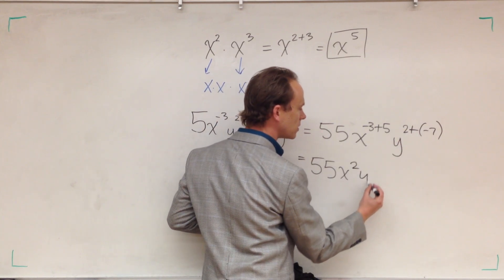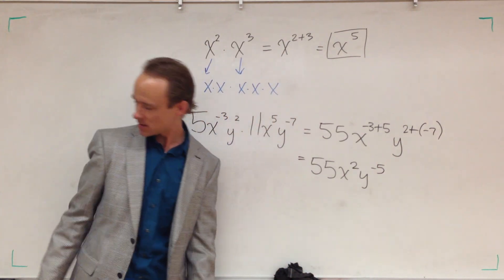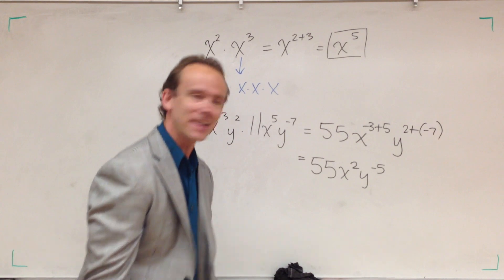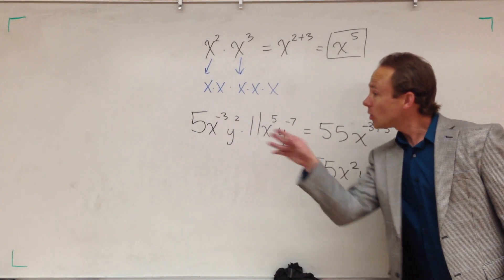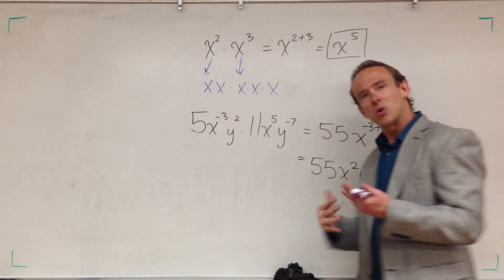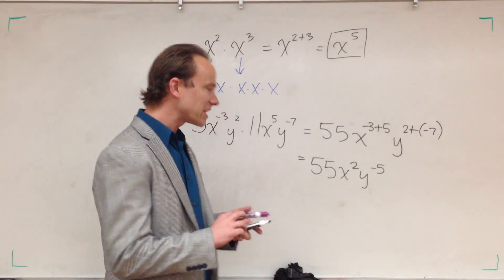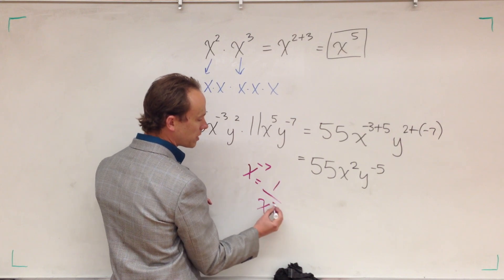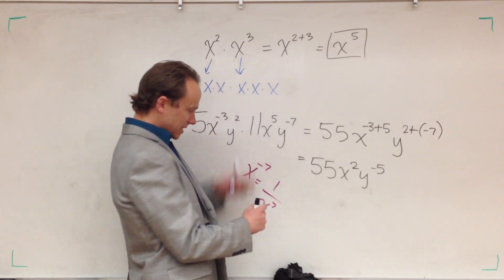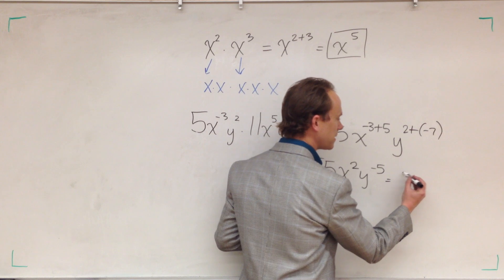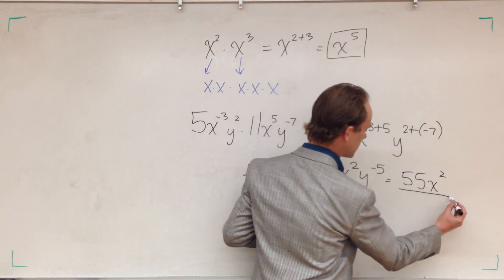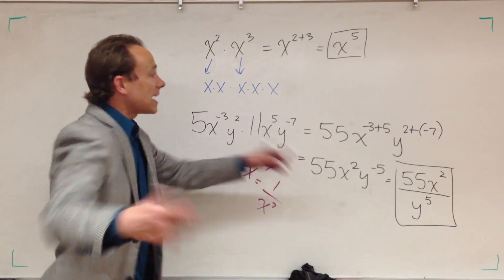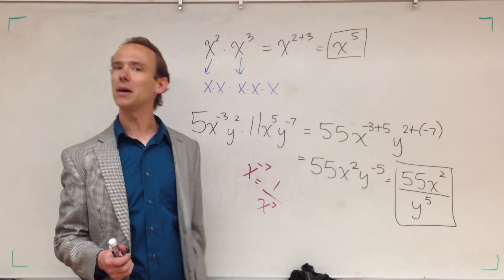Now let's deal with the y's. I know that when I'm multiplying these variables, the variable stays the same and I add the exponents — so the negative isn't going to trick me up. I've got two plus negative seven, which gives me y to the negative five. Am I done? No, I'm not done yet. With exponents, it's not simplified if you have a negative exponent. So we use the rule: a variable raised to a negative exponent — you put it over one and make the exponent positive. The answer is 55x squared over y to the fifth.